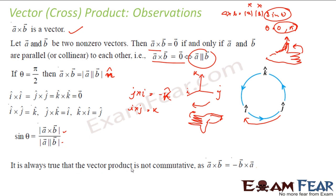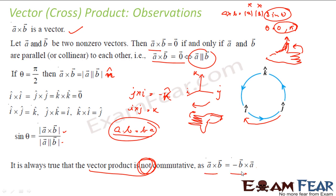The vector product is not commutative. In scalar product, a dot b equals b dot a. But in cross product, a cross b is not equal to b cross a — instead, a cross b equals minus b cross a. The magnitude of a cross b and b cross a is the same (both are a·b·sin theta), but the direction is different — in fact, it is exactly opposite. As seen with j cross i being minus k and i cross j being k.